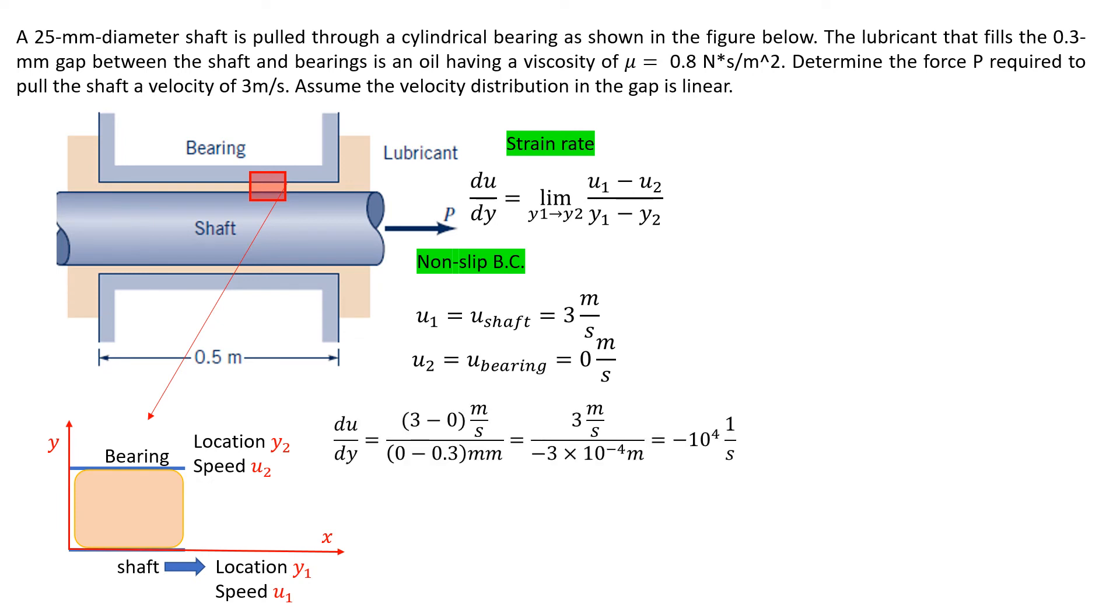Then du/dy equals (u₁ - u₂)/(y₁ - y₂). Plugging all the numbers into it, we get a strain rate of negative 10⁴ with the unit 1/second. The negative value just indicates that the friction is opposite to the coordinate we set up.